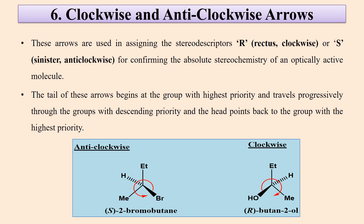Then there are clockwise and anticlockwise arrows. These arrows are used in assigning the stereodescriptors R (rectus, clockwise) or S (sinister, anticlockwise) for confirming the absolute stereochemistry of an optically active molecule. The tail of these arrows begins from the group with the highest priority and travels progressively through groups with descending priority, and the head points back to the group with the highest priority. It is S for anticlockwise.